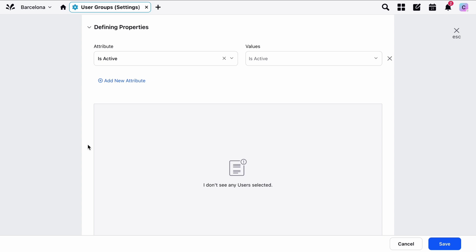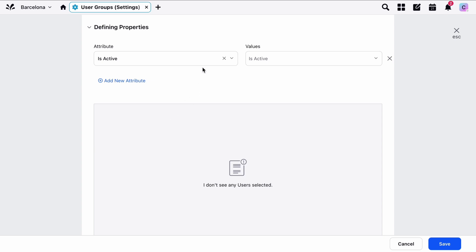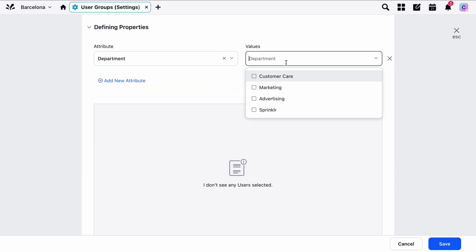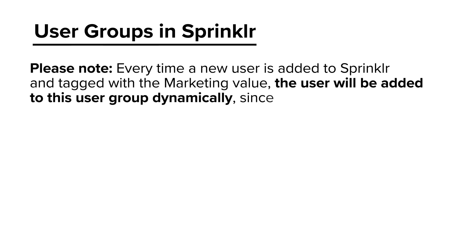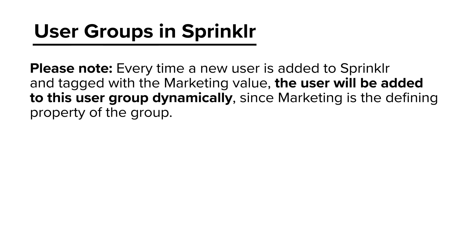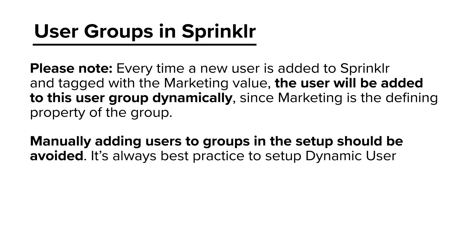Select the value that you need to match with this group. In this example, you would select Department as the attribute and Marketing as the value. Every time a new user is added to Sprinklr and tagged with the Marketing value, the user will be added to this user group dynamically, since Marketing is the defining property of the group. Manually adding users to groups in the setup should be avoided.